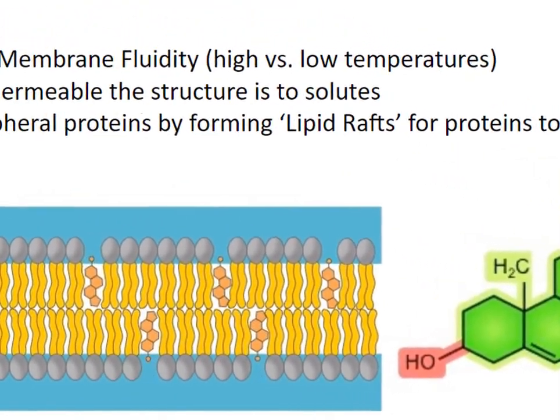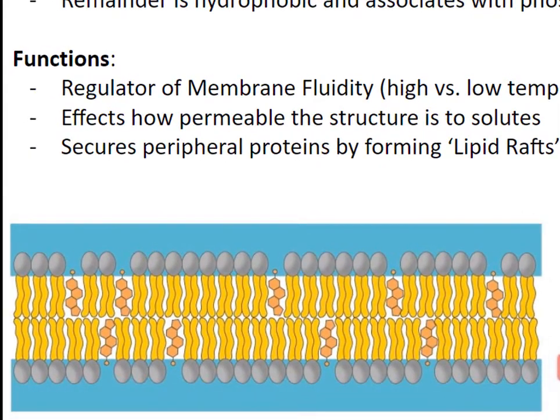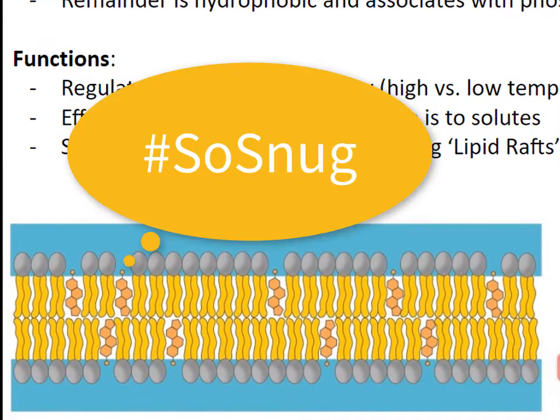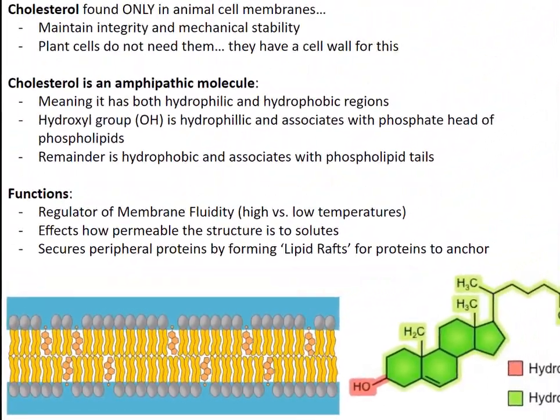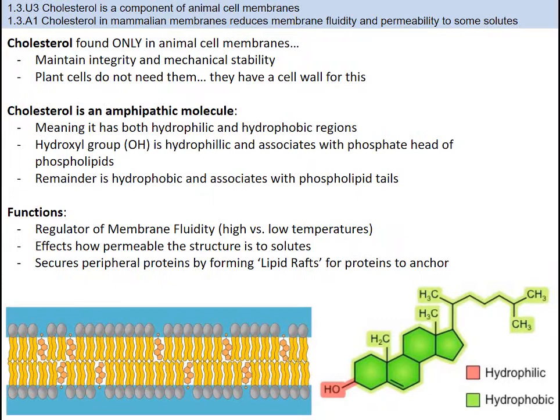The phospholipid sits with the cholesterol snug like a bug in a rug. Cholesterol is a regulator of membrane fluidity, which is the viscosity of the membrane. At high temperatures, it stabilizes the membrane and raises the melting point. At low temperatures, it prevents the phospholipids from packing too tightly together and stiffening. Additionally, cholesterol provides little lipid rafts that peripheral proteins can attach to. Plants don't have cholesterol simply because they have a cell wall and do not need them to remain stable, which is also why plants are a bit more rigid.